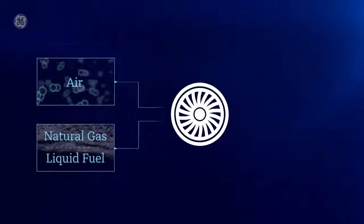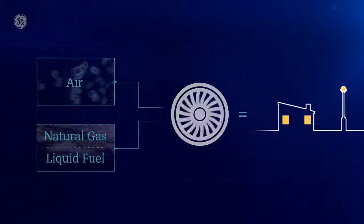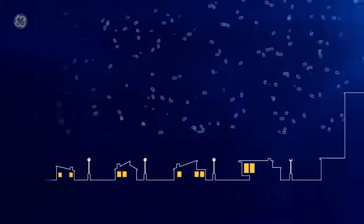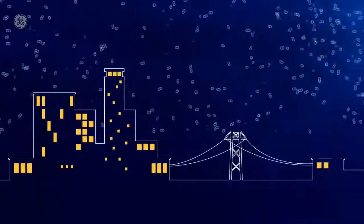A gas turbine spins the generator that produces electric current. If you follow the electricity you use at home or at work back through the power lines to your local power plant, you'll see that the process most likely starts with the work of the gas turbine.